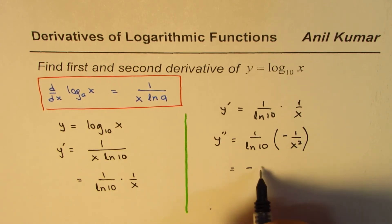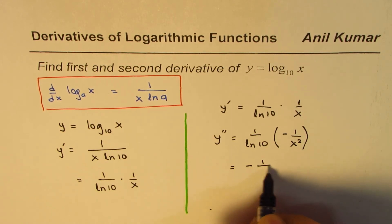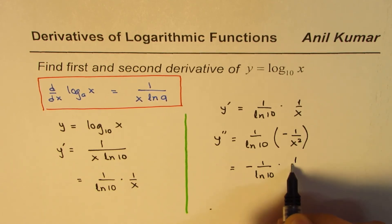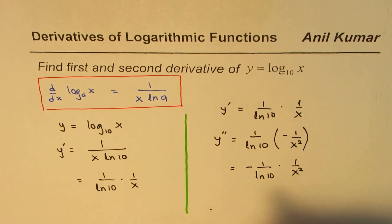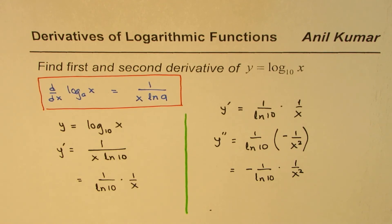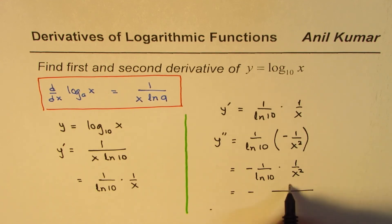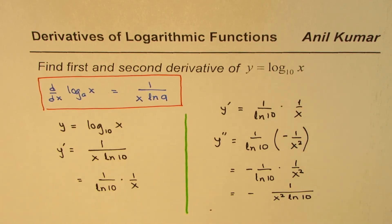It could be written as minus 1 over ln 10 times 1 over x squared. So that becomes the second derivative of this function, which you could also write as negative 1 over x squared ln 10. So that is how you could write your second derivative.